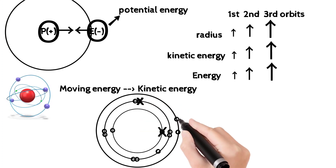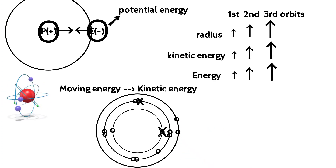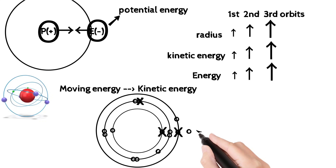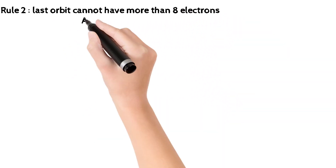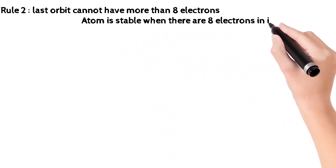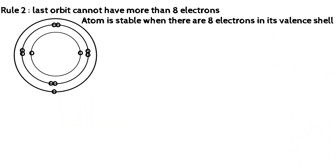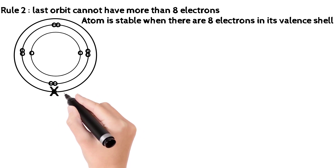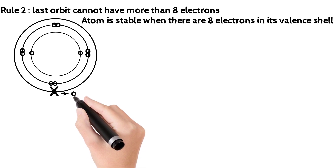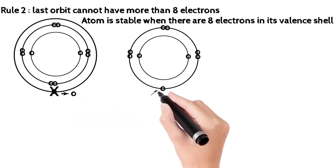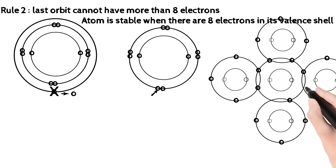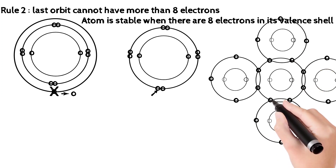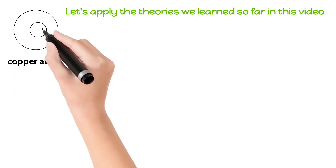The outermost orbit electrons are called valence electrons. If there are 8 electrons in the valence orbit, that is a stable atom. If the valence orbit has only one electron — as in copper — that electron is loosely held and is considered a free electron with the highest energy in its orbit.